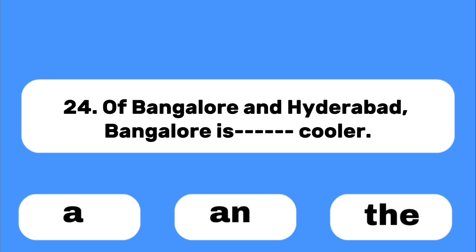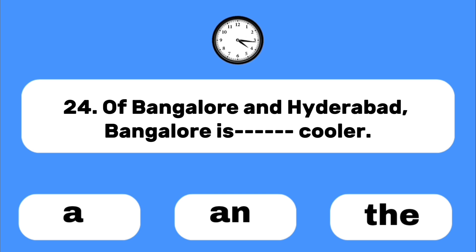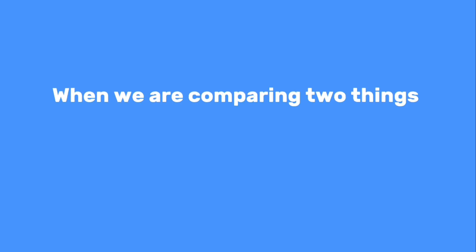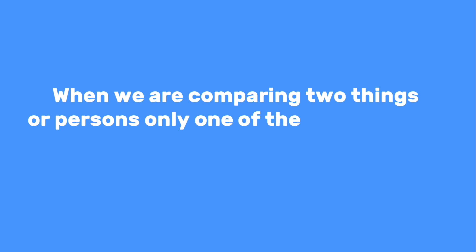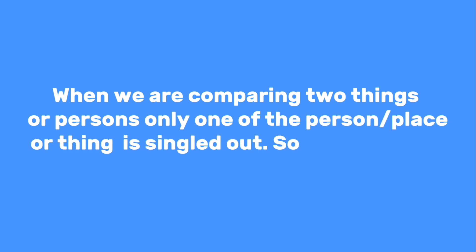Number twenty-four: Of Bangalore and Hyderabad, Bangalore is ___ cooler. When we are comparing two things or persons and only one is singled out, we use 'the.'